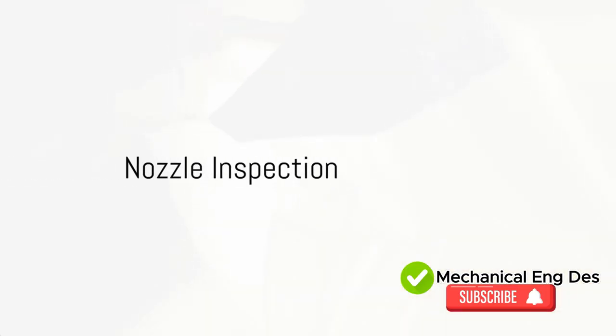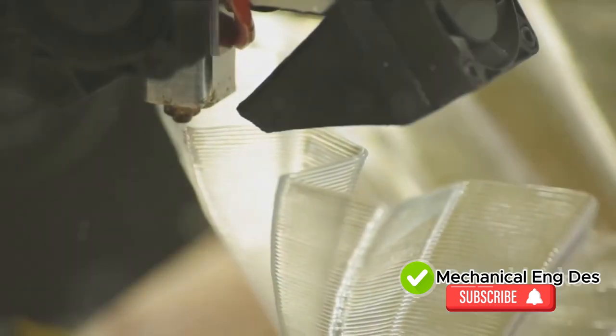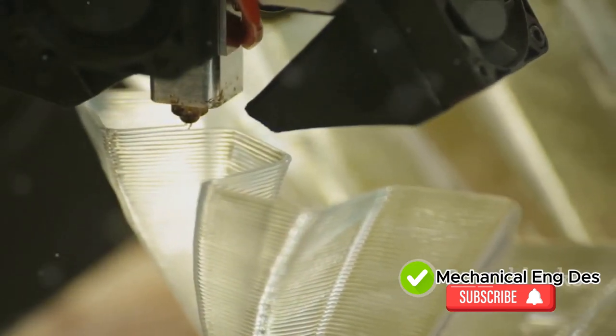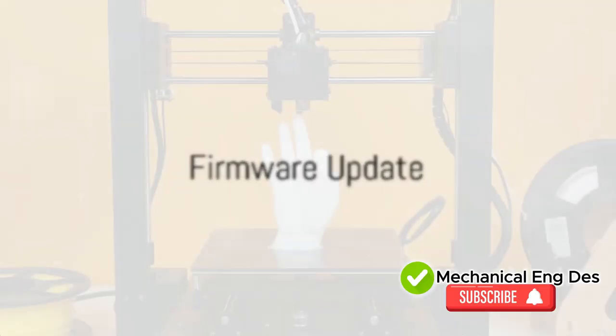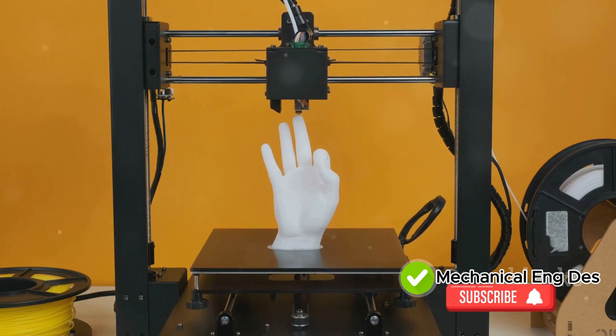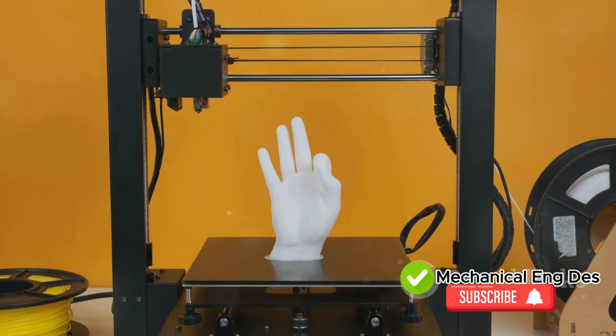Time to inspect the nozzle. Look for debris or clogs that could be causing problems. If necessary, don't hesitate to clean or replace the nozzle. Ensure that the 3D printer's firmware is up to date. Firmware updates often come with bug fixes and performance improvements.